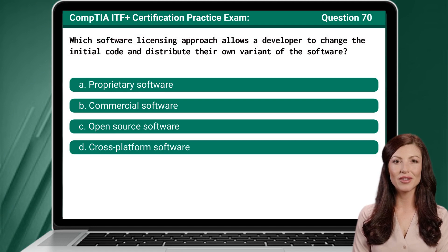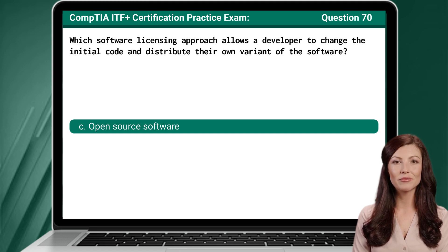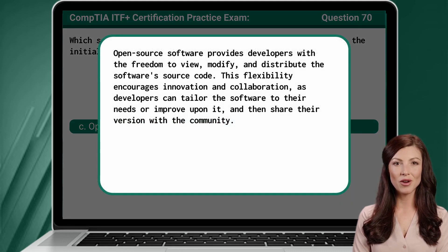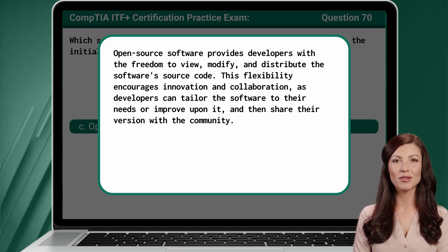Question 70. Which software licensing approach allows a developer to change the initial code and distribute their own variant of the software? The answer is C: Open Source Software. Open Source Software provides developers with the freedom to view, modify, and distribute the software's source code. This flexibility encourages innovation and collaboration, as developers can tailor the software to their needs or improve upon it and then share their version with the community.